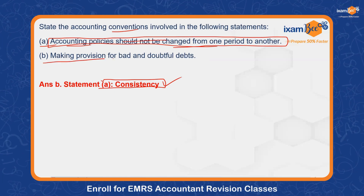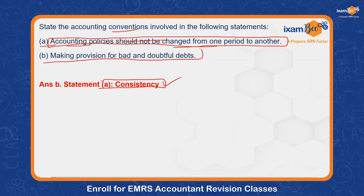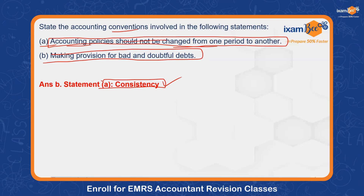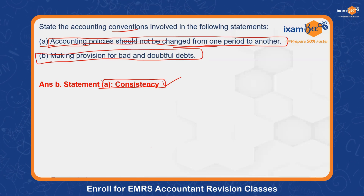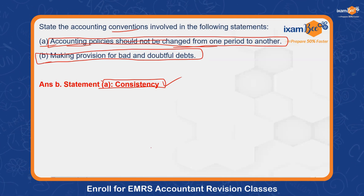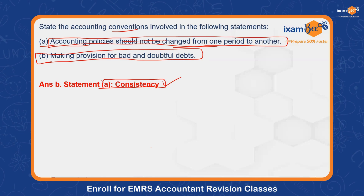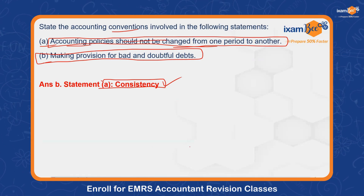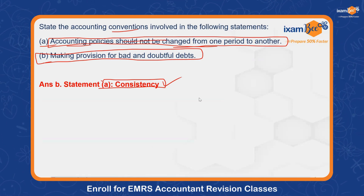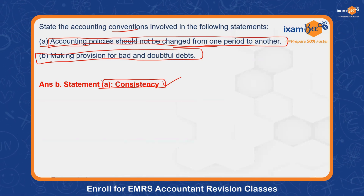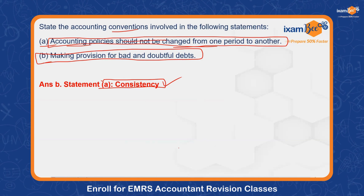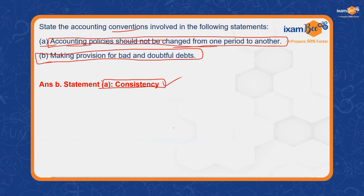Next one — making provision for bad and doubtful debts. Which convention is this? Prudence. Conservative. Exactly — both names: Prudence and Conservatism.